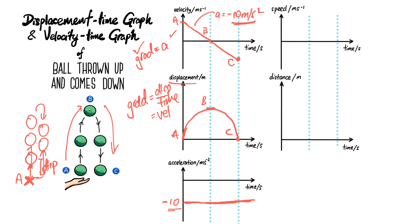Now let's cover the speed-time and distance-time graphs. Speed and distance are scalar quantities, so direction is not important — there won't be a negative portion. For the speed-time graph, the first part from A to B is the same as before — constant deceleration. But from B to C, because speed has no negative, the speed increases faster and faster down to point C, giving a V-shaped speed-time curve.